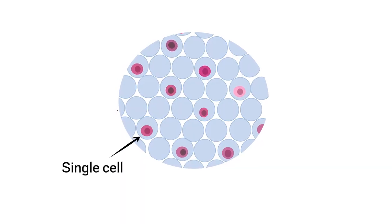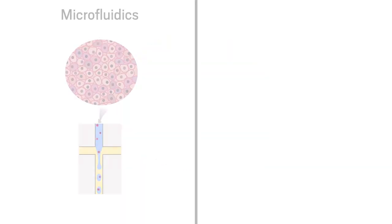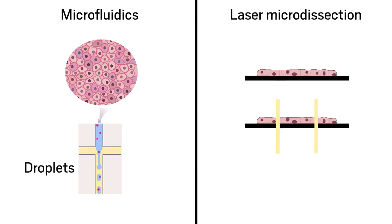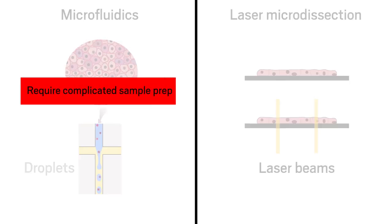Currently, researchers isolate single cells with techniques like microfluidics, which capture cells using droplets, or laser microdissection, which uses laser beams to cut out individual cells. But these methods can require complicated sample prep and can damage cells.